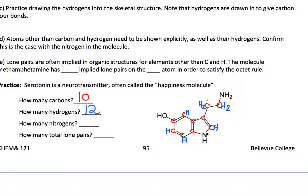How many nitrogens? I just see these two nitrogens here. And then how many total lone pairs?